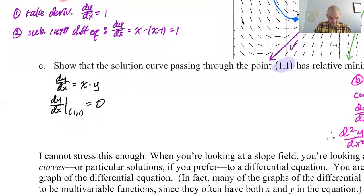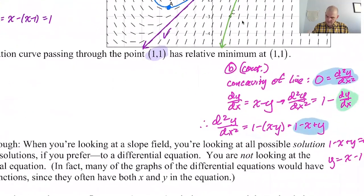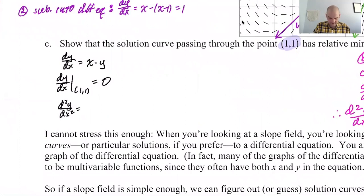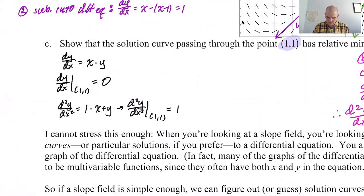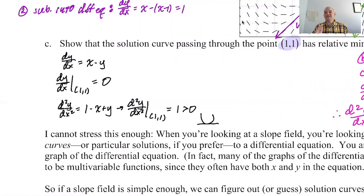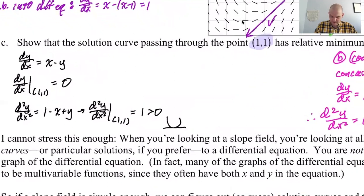We already found the second derivative: it's 1 minus x plus y. Evaluating at (1, 1) gives 1 minus 1 plus 1, which equals 1, and that is greater than zero. So the first derivative is zero and the second derivative is positive, which means we have a relative minimum.